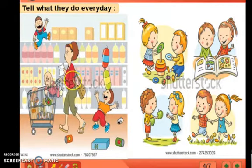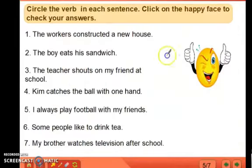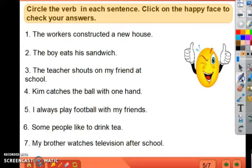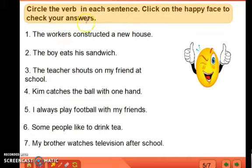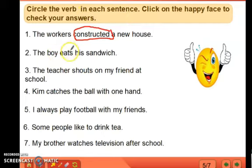Here we are going to circle the action verb. 'The workers constructed a new house.' Workers is the name of a person, so it is a noun. House is the name of a place, so it is a noun. Now ask yourself two questions: who is the sentence talking about? Workers — it is the subject. What did the workers do? They constructed. So 'constructed' is the action verb.